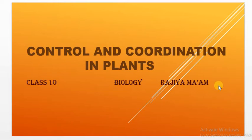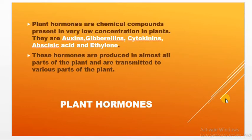In plants, the control of plant parts and their development is controlled by hormones. Hormones are specific chemicals secreted by different glands in human beings, but in plants almost all parts of the plant produce hormones. They are specific chemicals responsible for the growth and development of plant parts, and are also known as phytohormones.